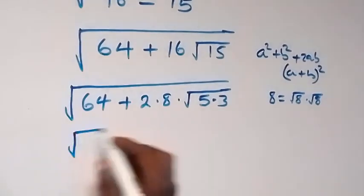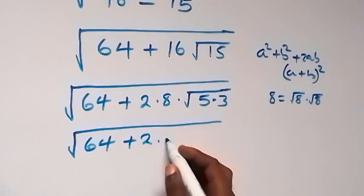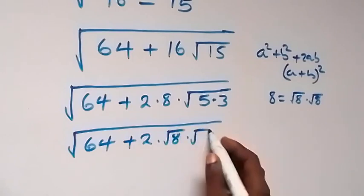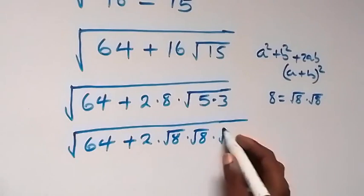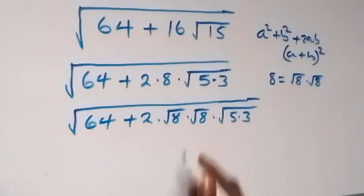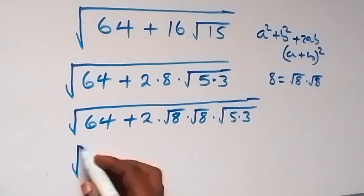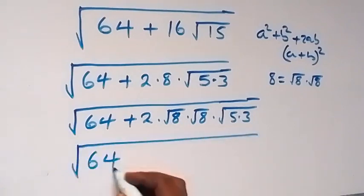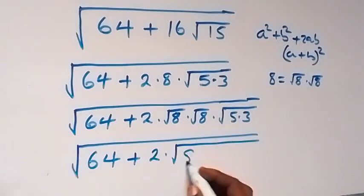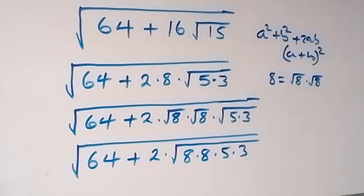So here we have root 64 plus 2 times root 8 times root 8, times root 5 times root 3. Let's bring everything together under the same root. This becomes the square root of 64 plus 2 times root(8 × 8 × 5 × 3).